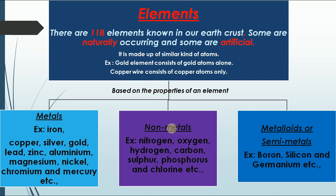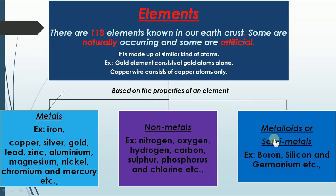In this video we are going to talk about the next type of element, called metalloids or semi-metals. Whenever you come across the word 'semi', it means partial. So these elements have partial character of both metals and non-metals. That is the reason they are called semi-metals.